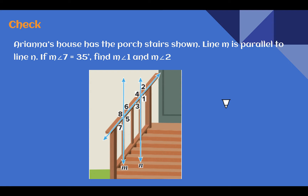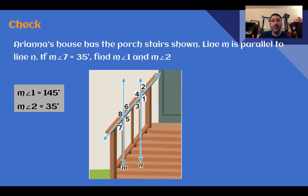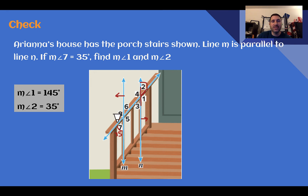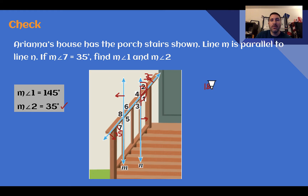Check your understanding — find the measures of angles one and two. The answer: angle one is 145° and angle two is 35°. Angle seven is 35°. Angles seven and two are alternate exterior angles — outside the parallel lines on opposite sides of the transversal — so angle two also equals 35°. Then angles two and one form a straight angle, meaning they are supplementary: 180 minus 35 equals 145°.